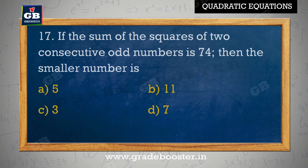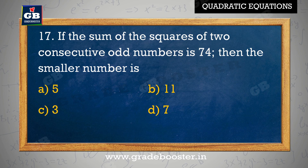If the sum of the squares of two consecutive odd numbers is 74, then the smaller number is: A. 5, B. 11, C. 3, D. 7.